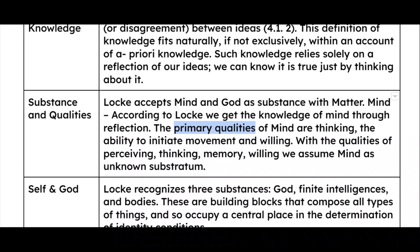The primary qualities of mind include thinking, ability to initiate movement, and willing — the qualities of perceiving, thinking, memory, and willing. We assume mind as an unknown substratum. Basically we do not have much direct idea of mind, but because of reflection through the mind, we figure out how we can understand all the things around us.